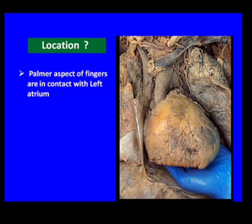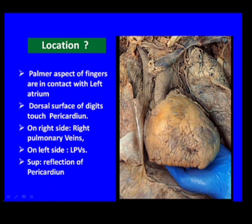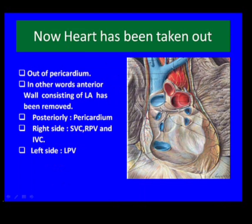To understand the anatomy of the oblique sinus, consider this diagram where the pericardium has been removed and a left hand placed posterior to the heart. The diaphragmatic surface rests on the forearm. The anterior aspect of the digits contacts the left atrium, which forms the anterior boundary. The dorsal aspect contacts the pericardium, which forms the posterior boundary. The fingers are bounded on the right by the superior vena cava, right pulmonary veins, and inferior vena cava, and on the left by the left pulmonary veins. Superiorly, a reflection of pericardium limits upward movement, and inferiorly the sinus is open.